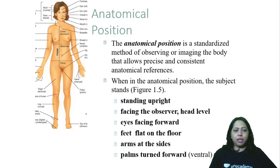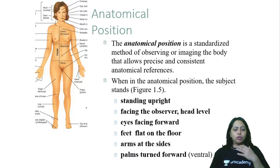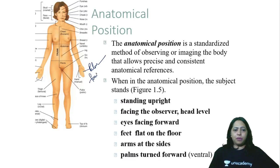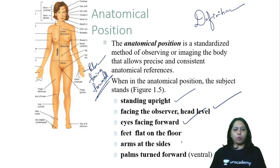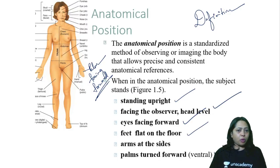Looking at the anatomical position again: the person is looking forward, arms are facing forward, palm is facing forward — that is very important. She is standing upright, face facing forward, head level, eyes facing forward, feet flat on the floor and facing forward, arms on the sides, and palms turned forward. If you turn the palms in any other direction, it will not be the anatomical position.